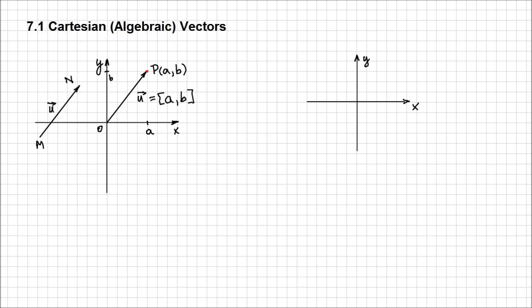Now let me introduce a new concept that you're going to find very useful to describe vectors. Let's see what the unit vectors are. The unit vector is that vector that has a magnitude of 1 and has the same direction as one of the axes of the system. This first unit vector I'm describing here I'm going to call i. It starts at the origin, has a magnitude of 1, and has the direction of the x-axis. And of course we're going to have another vector, we're going to call this one j, and this has the magnitude of 1, starts at 0, ends at 1, going in the same direction as the y-axis.